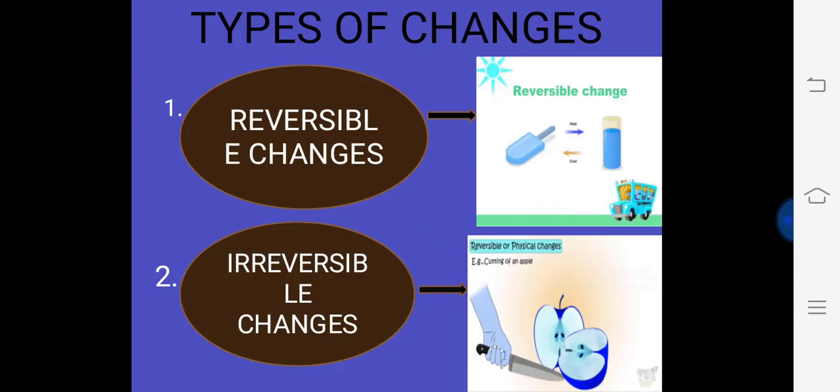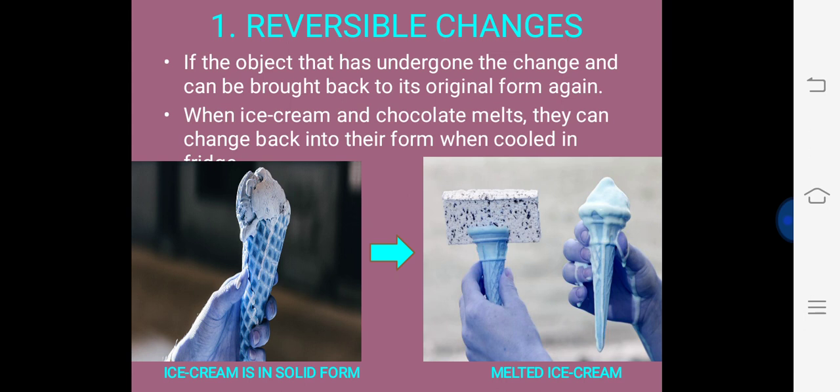Let's come on to the types of changes. We have two types of changes: reversible changes and irreversible changes. You can see the examples on their side. First, reversible changes.